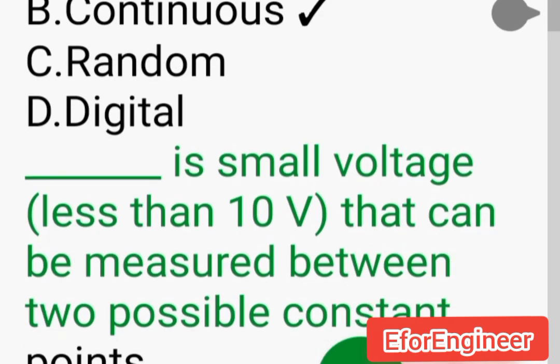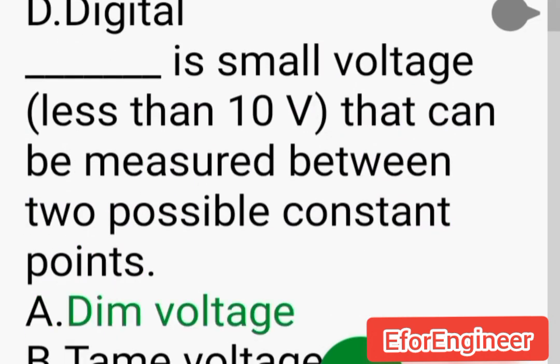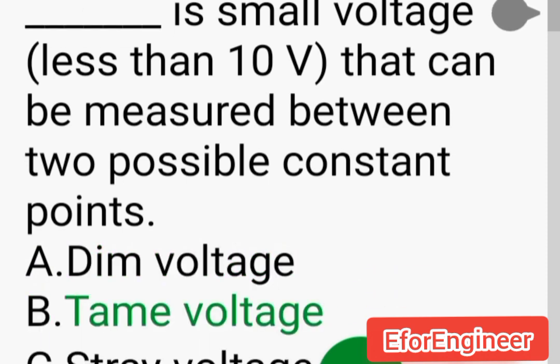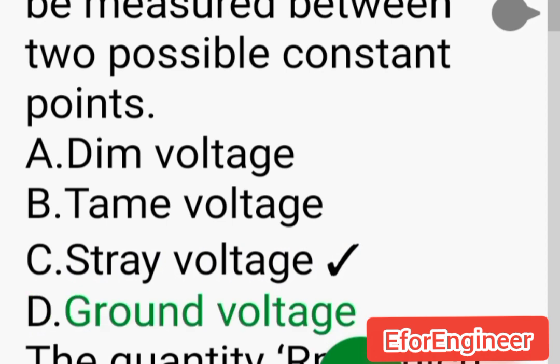___ is small voltage (less than 10 volts) that can be measured between two possible constant points: A. Dim voltage, B. Tame voltage, C. Stray voltage, D. Ground voltage.